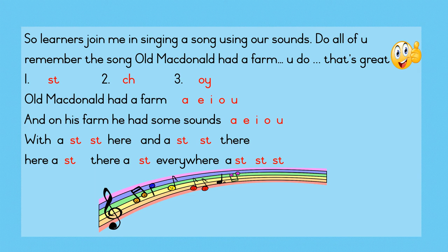So learners, join me in singing a song using our sounds. Do all of you remember the song Old Macdonald had a farm? That's great. You don't have to be seated while we are singing the song. You can stand up, dance and clap while we sing along and have some fun. The three sounds we are going to use in the song are: number one st, number two ch, number three oi. So let's begin.